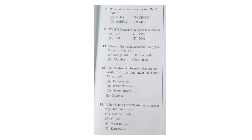The first question from the environment section was: which is the nodal agency of UNEP — United Nations Environment Program — in India? The correct answer is C: the Ministry of Environment, Forest and Climate Change is the nodal agency for UNEP in India.